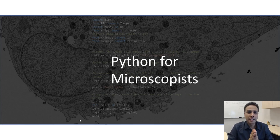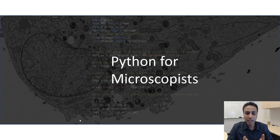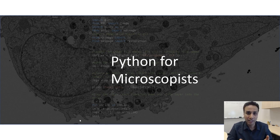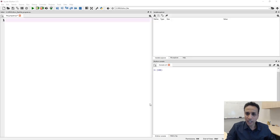Hey guys, this is Srini and you're watching Python tutorial videos on my channel Python for Microscopists on YouTube. In the last couple of tutorials we talked about the OpenCV library as part of Python and its basic functionalities. Today let's build on that and look at thresholding, and how to clean up noisy thresholded images using erosion, dilation, and other morphological operations. I'm using Spyder IDE which is part of the Anaconda distribution.